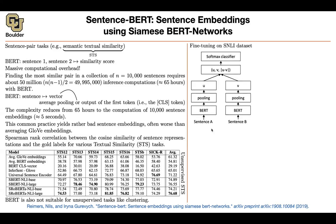So what is the solution? How can you make things better? We know about the natural language inference task, which is just a classification task: are these two sentences entailing each other, contradicting, or neutral? You take a pair of sentences, push them through BERT — the same BERT with the same parameters. You do your pooling at the end, giving you two vectors. You do some feature engineering, put a softmax classifier on top — essentially logistic regression — and it classifies between neutral, contradiction, and entailment. Then you fine-tune on this task.